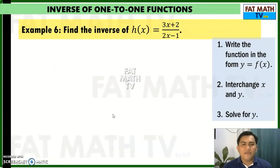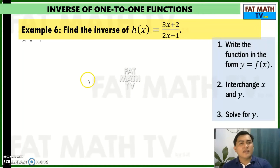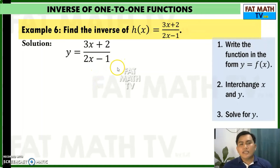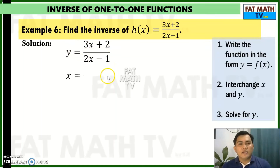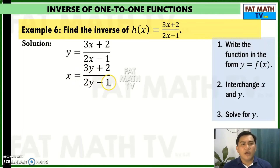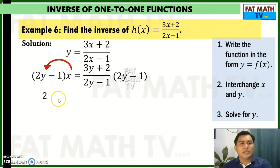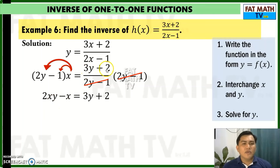Last example: pause the video and try it on your own. First step, write it as y equals h of x, so y equals 3x plus 2 over 2x minus 1. Interchange x and y: x equals 3y plus 2 over 2y minus 1. Multiply both sides by 2y minus 1: 2y times x gives 2xy, negative 1 times x gives negative x, and 2y minus 1 cancels, leaving 3y plus 2. Since we are solving for y, put terms with y on one side and terms without y on the other.